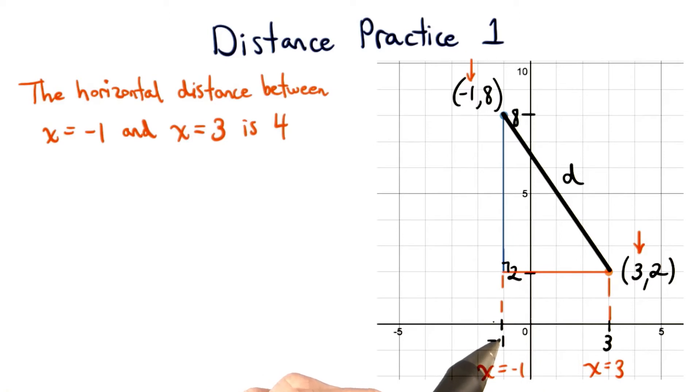We have to move 4 units in the x direction to get from x equals negative 1 to x equals positive 3.